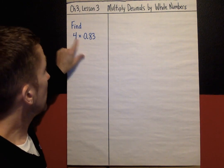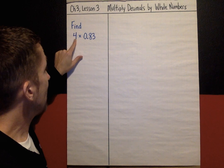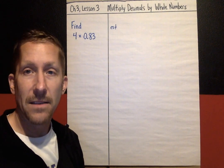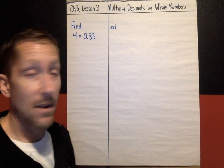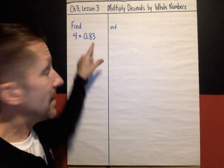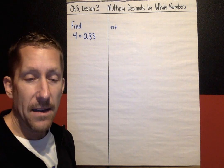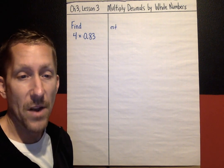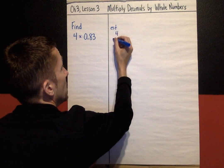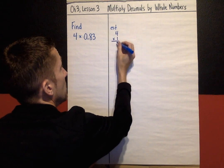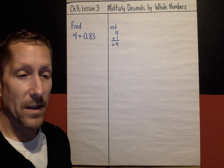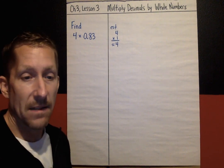The first thing that you should do if you are able is, just like we did in the last lesson, make an estimate. So I'm going to think out loud. Well 4, that's a nice easy round number, I'm going to leave that a 4. And 0.83, I'm going to think of that as 83 cents and that's pretty close to a dollar. So my estimate is about 4. If my answer is not relatively close to 4, then something's not right.